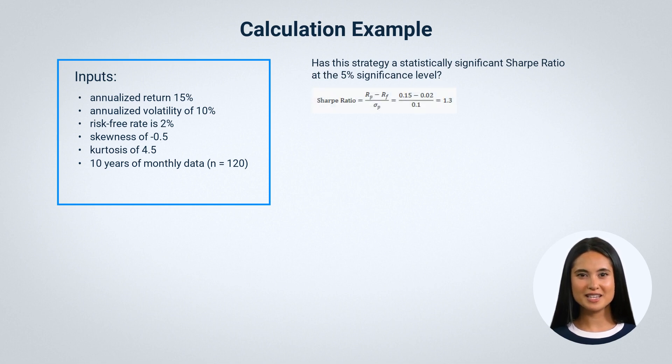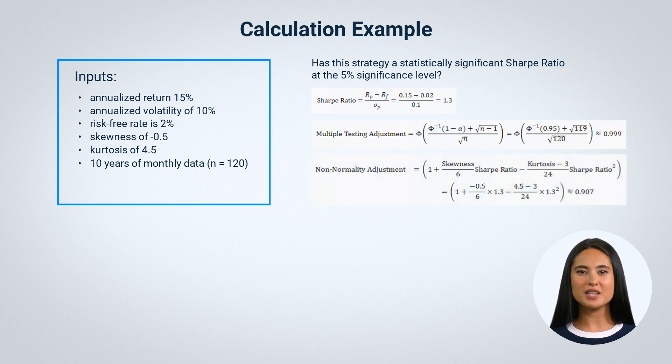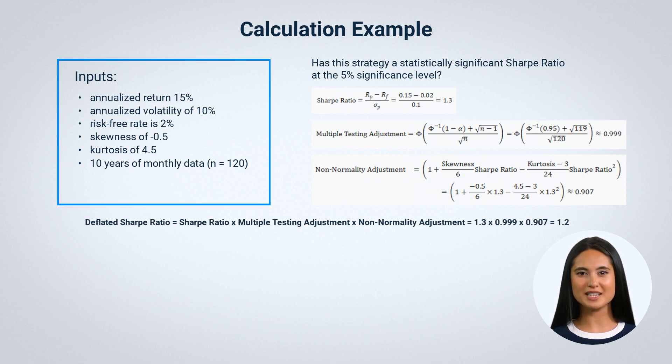First, we need to calculate the original Sharpe ratio. Next, we need to calculate the multiple testing adjustment, where phi is the cumulative distribution function of the standard normal distribution and phi to the degree of minus 1 is its inverse function. Finally, we need to calculate the non-normality adjustment. Now we can plug these values into the formula for the deflated Sharpe ratio.